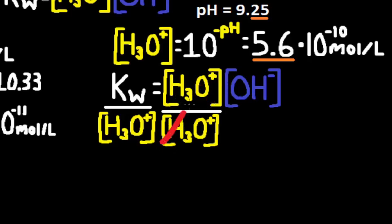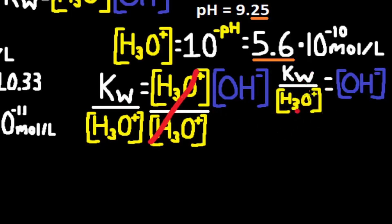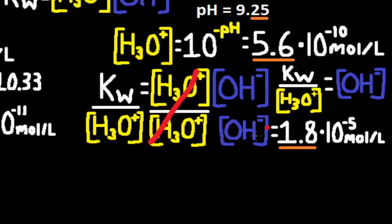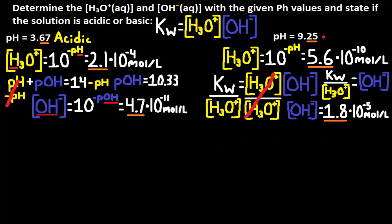KW divided by H3O+ equals OH-. KW is 1.0×10⁻¹⁴ divided by 5.6×10⁻¹⁰ gives OH- = 1.8×10⁻⁵ moles per liter, with two sig digs. The solution is basic since pH is greater than 7. Another way to confirm: OH- concentration (1.8×10⁻⁵) is greater than H3O+ concentration (5.6×10⁻¹⁰), so the solution is basic.